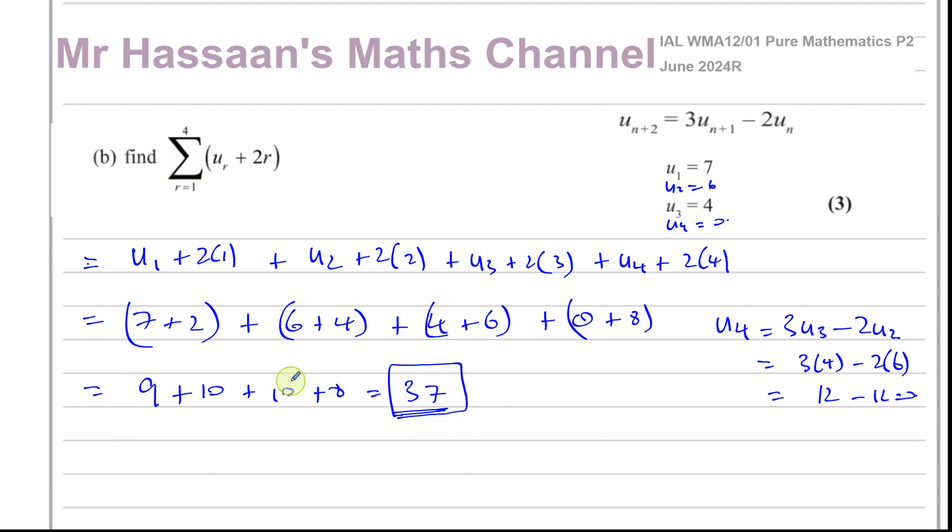Unless this itself is a geometric sequence and they're only asking you for the first four terms, you just find what they are and add them together. If it says r equals 1 to 25, for example, then you would expect it comes out as a type of sequence that you can work out—either it's a geometric or arithmetic, or it's got some sort of repetition that happens with the terms so you can work out what they are.